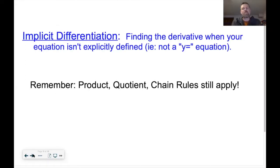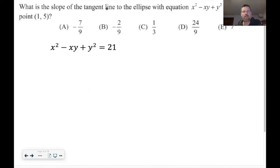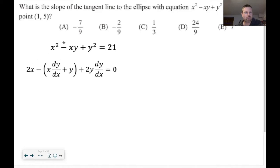Implicit differentiation is finding the derivative when your equation isn't a nice y-equals equation. Remember: the product rule, quotient rule, and chain rule always apply. For example, finding the slope of the tangent line to an ellipse at the point (1, 5). The derivative of x squared is 2x. For the product term, product rule gives: first times derivative of the second plus second times derivative of the first — so x times dy/dx plus y times 1.